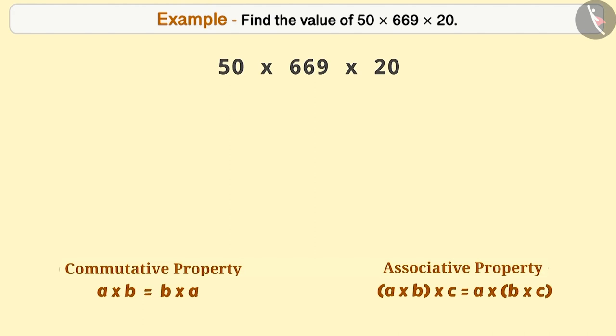Let's understand this. Using commutative property of multiplication, numbers can be written like this by changing their order. And using associative property, they can be made into a group like this. The product of 50 and 20 can easily be obtained as 1000. Similarly,